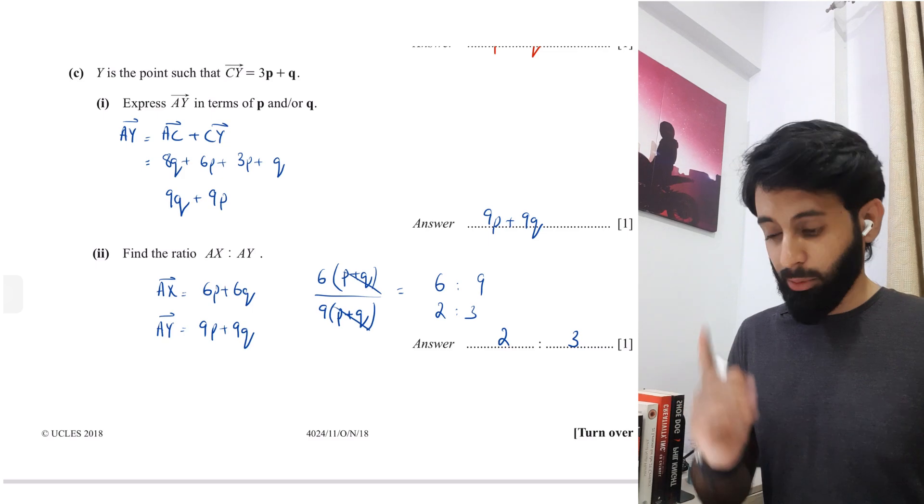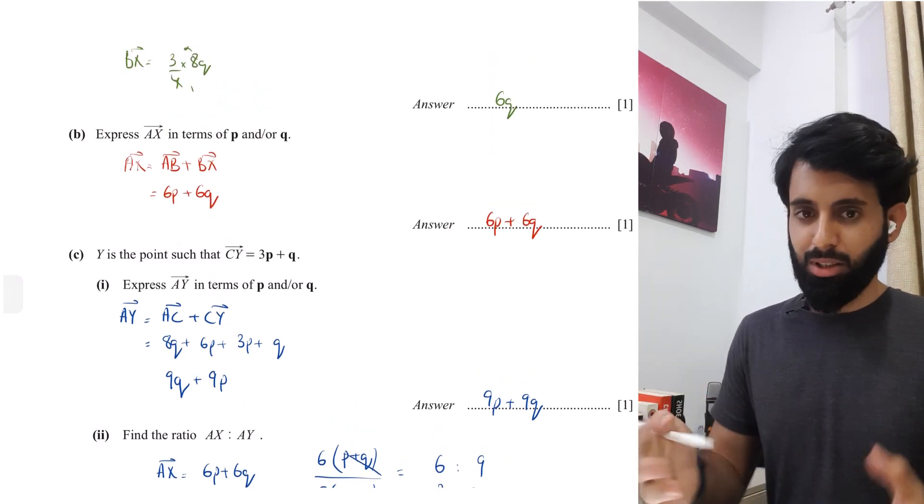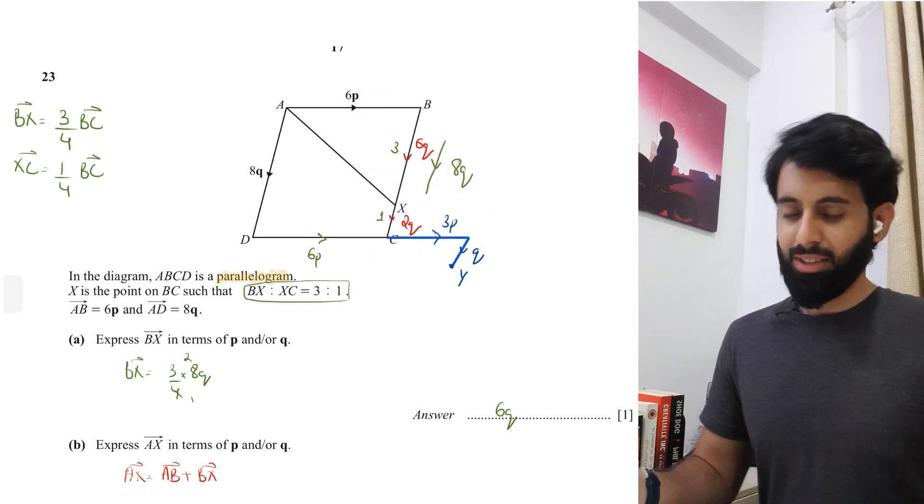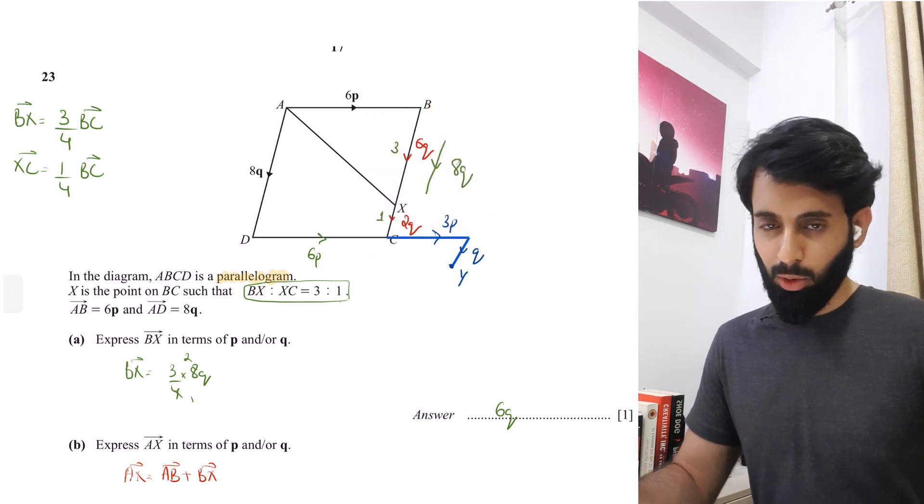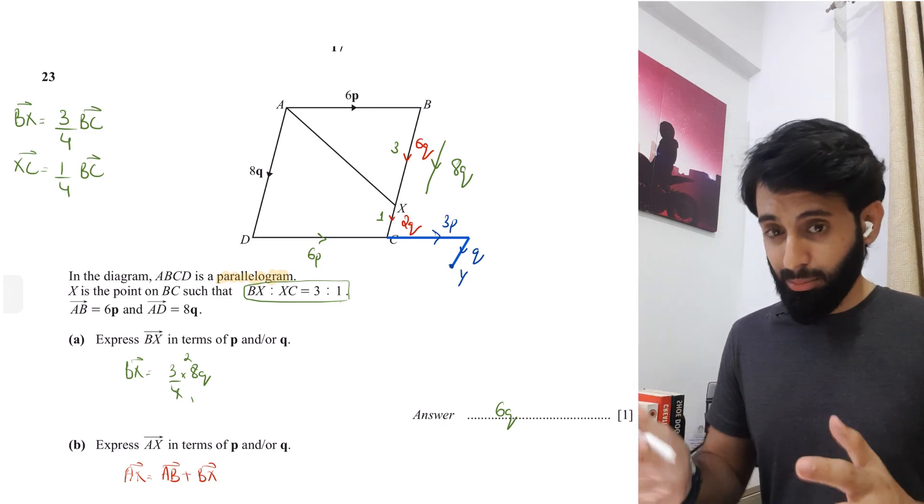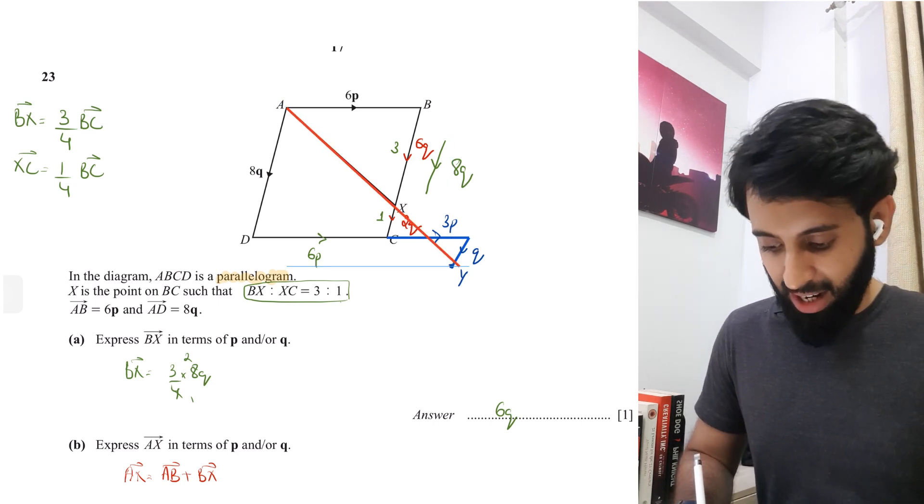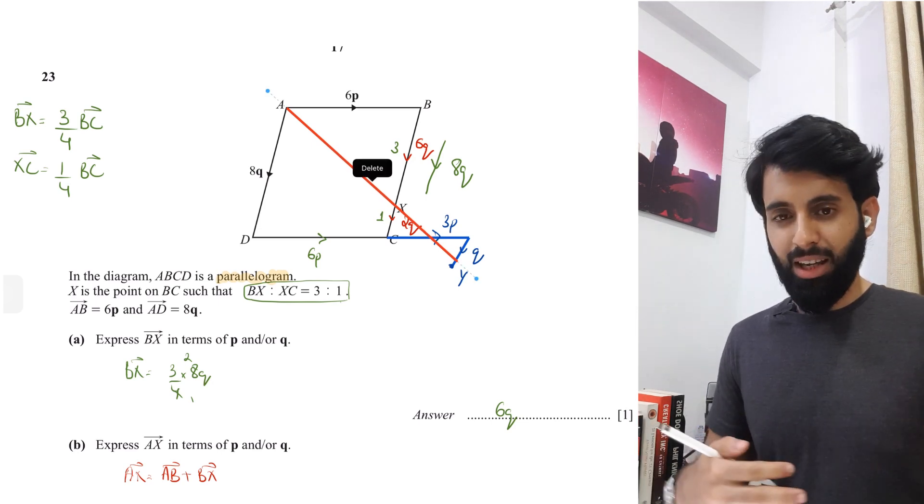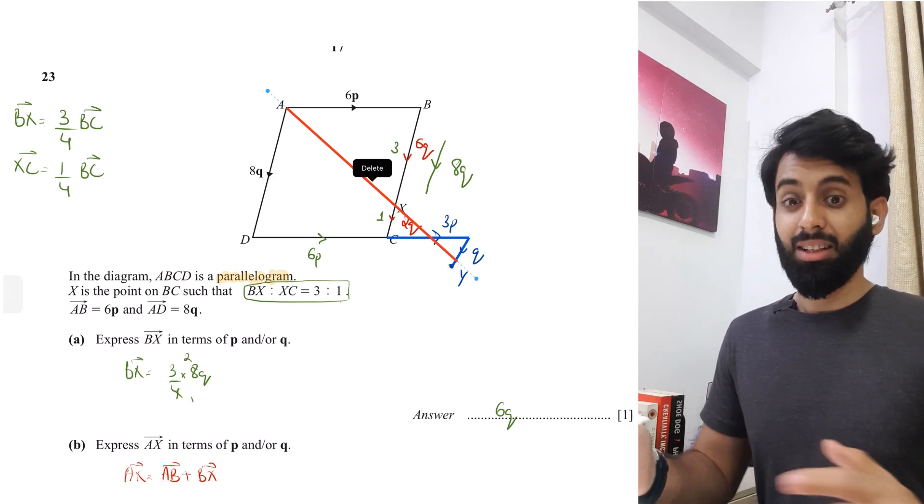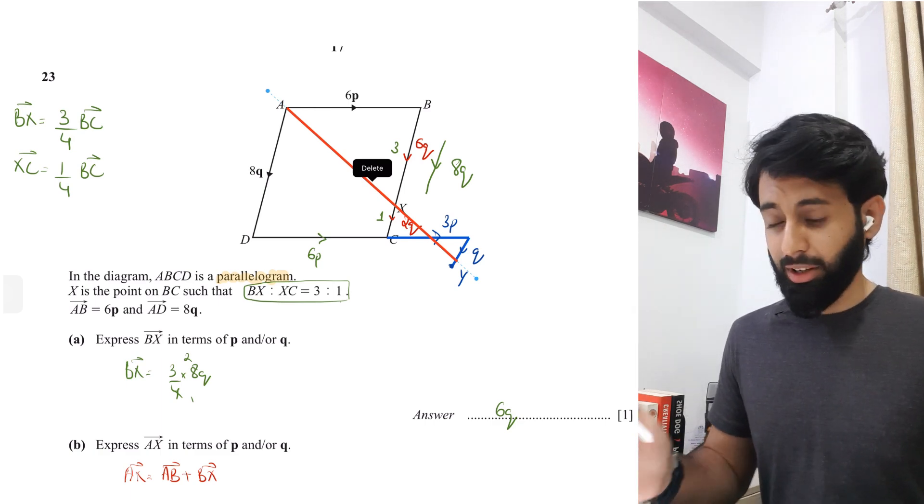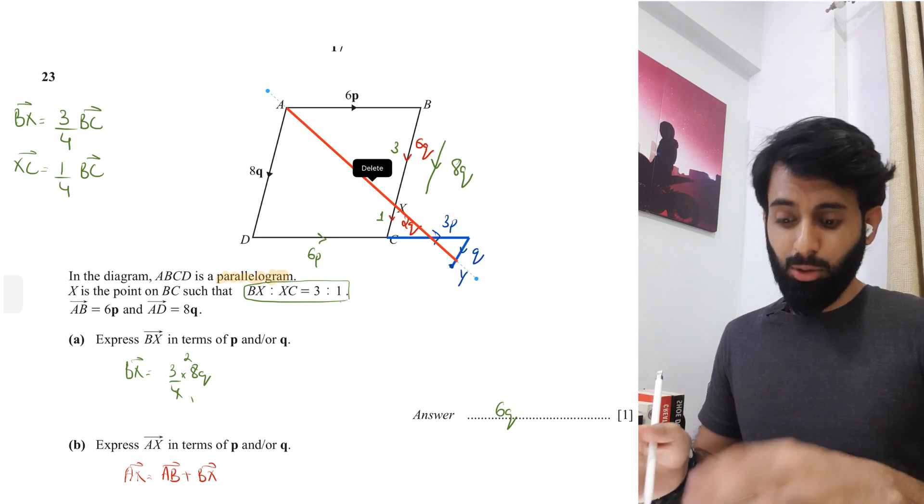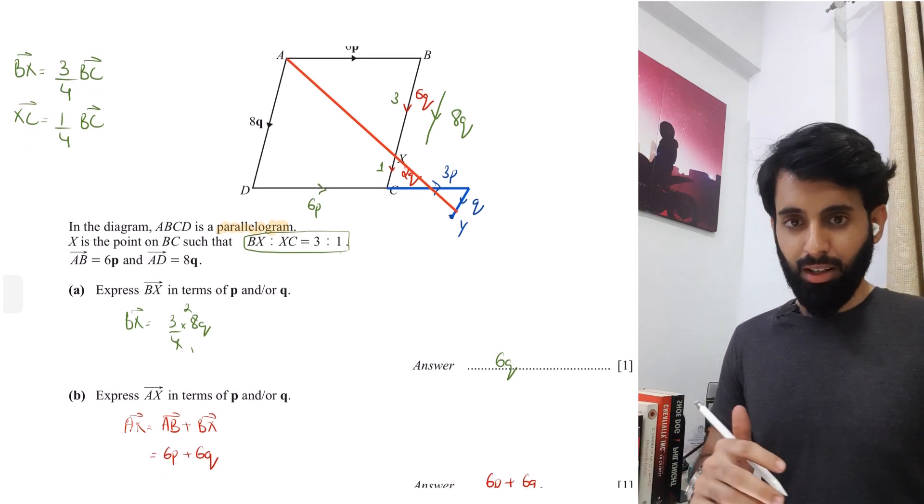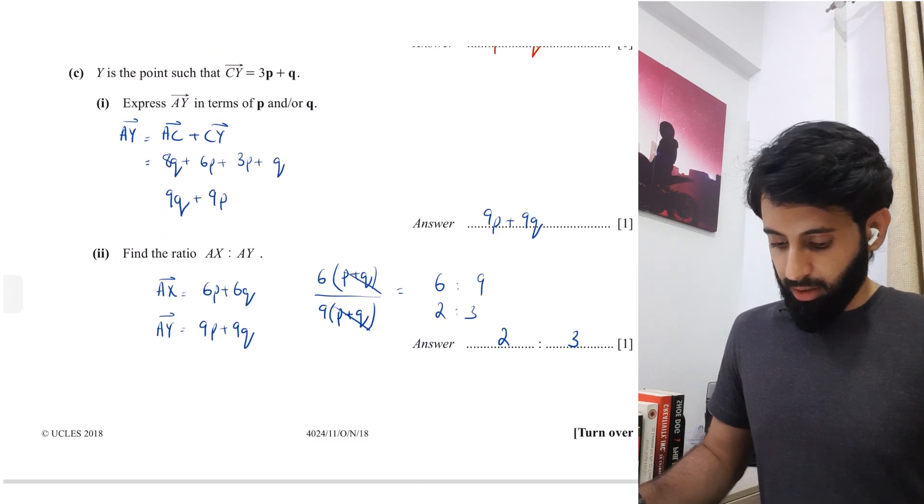That's the end of the question. I want you to understand what this means. Since they're in a certain ratio, they're either parallel or collinear. Over here there's no way they can be parallel because they have a common point, so they have to be collinear. AX is six times of P plus Q, and AY is nine times of P plus Q. They're definitely collinear. The way you distinguish is that collinear vectors have a common point, just like here—they have a common starting point.